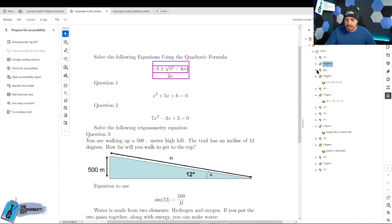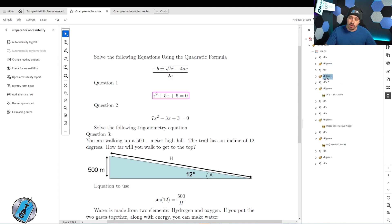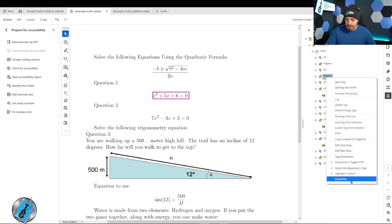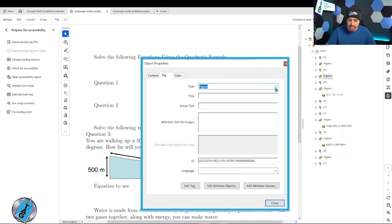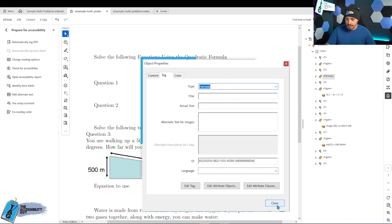Now there's been a lot of discussion on using formula tags, so we can play with that. Let's right click select properties and let's change this to a formula tag and select close.